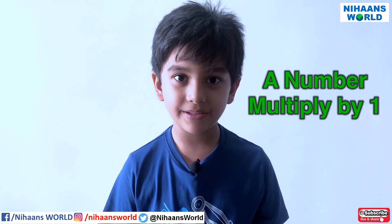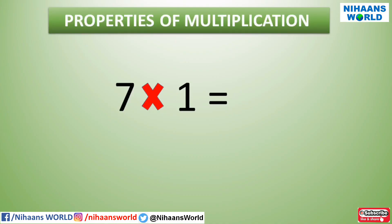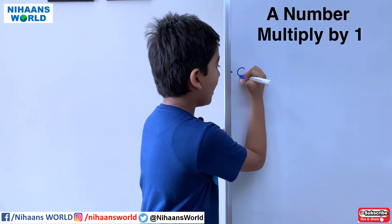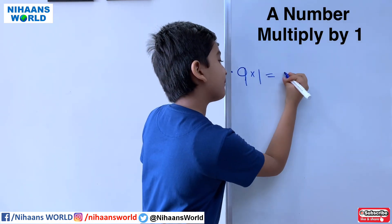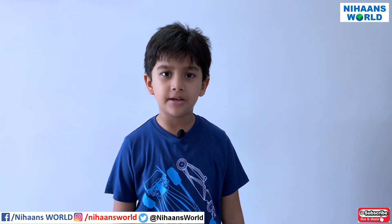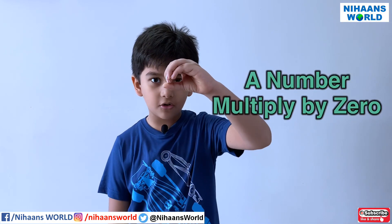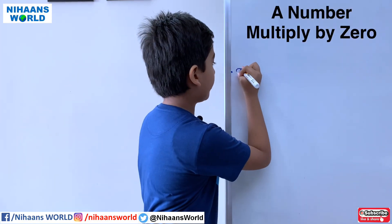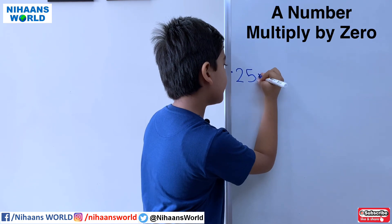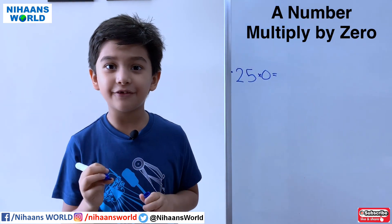Friends, what would happen if a number is multiplied by 1? When a number is multiplied by 1, the product is the same number. For example, 7 multiplied by 1 is equal to 7, and 9 multiplied by 1 is equal to 9. What would happen if a number is multiplied by 0? When a number is multiplied by 0, the product is always 0. For example, 15 multiplied by 0 is equal to 0, and 25 multiplied by 0 is also equal to 0.